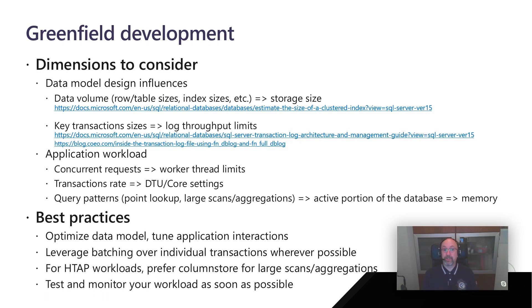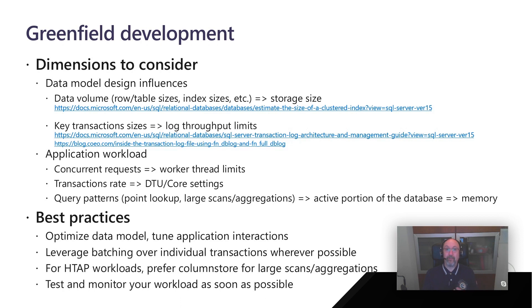There are some other application workload characteristics, like the amount of concurrent requests we are estimating for our workload, and this maps directly into the worker thread limits we have for each compute tier. By looking at all these different characteristics, you can start thinking about which compute size to start from. In Azure SQL Database, it's not like a traditional on-prem system where acquired hardware is static and inflexible. You always have the chance to move up or down in terms of scaling whenever you need, with basically no downtime.